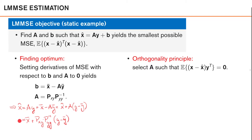You might recognize this expression from the derivation of the Kalman filter, where this was essentially the Kalman gain, this was the predicted mean, and this was the predicted measurement. Although doing these derivations in the vector case can be tricky, I would encourage you to go through the derivations for the scalar case — that is, when X and Y are scalars, which means that A and B are also scalar values.